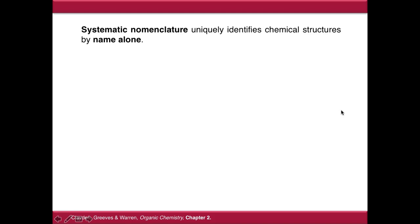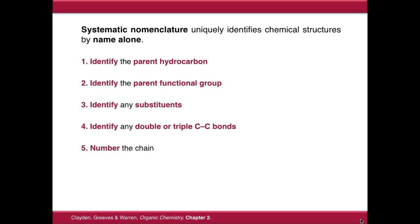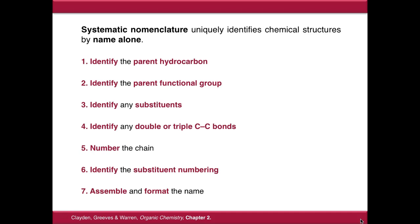Systematic nomenclature uniquely identifies chemical structures by their name alone and it follows a sequence of rules. First of all we have to identify the parent hydrocarbon, we then identify the parent functional group, we identify any substituents, we identify any double or triple bonds, we number the chain, identify the substituent numbering, and then assemble the name. We'll go through steps one to four progressively; steps five to seven we'll cover as we go along.